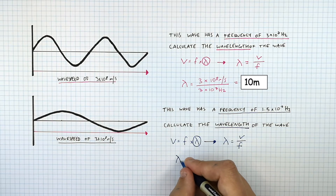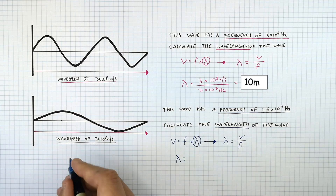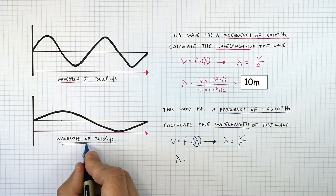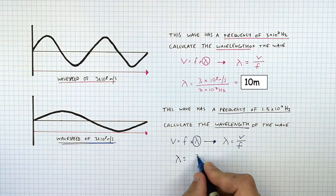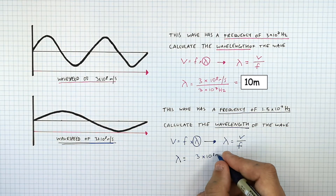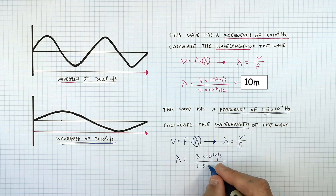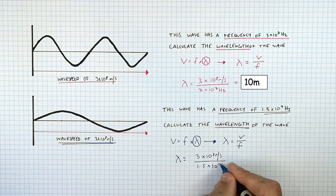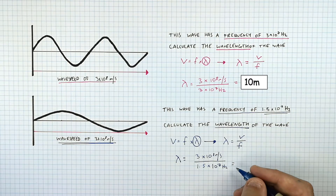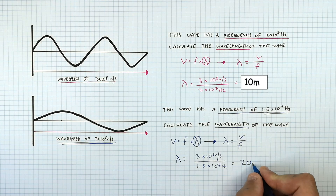Now substituting the numbers: wavelength equals 3 times 10 to the power of 8 metres per second, divided by frequency 1.5 times 10 to the power of 7 hertz. That will give you a wavelength of 20 metres.